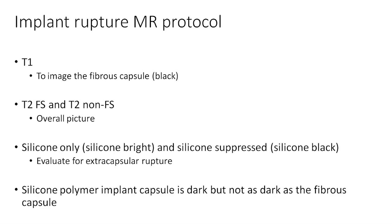Then most importantly, we want the silicone only, also known as a silicone bright sequence, as well as the silicone suppressed or silicone black sequence to evaluate for extracapsular rupture. So if you see something bright outside of both the fibrous and the polymer capsule on MRI, then it should be dark on the silicone suppressed sequence if it's bright on the silicone bright sequence, and that will be confirmatory that what you're seeing is definitely extracapsular silicone.